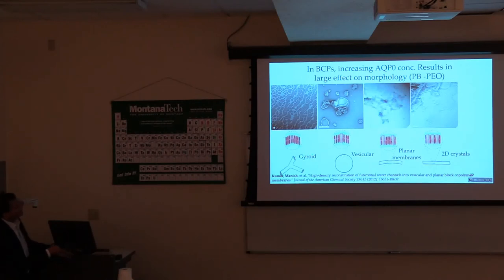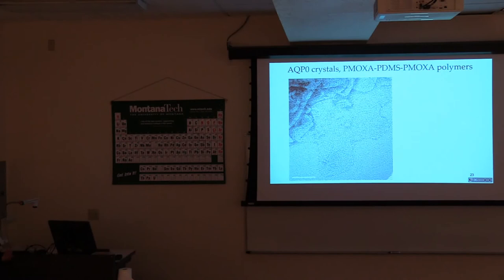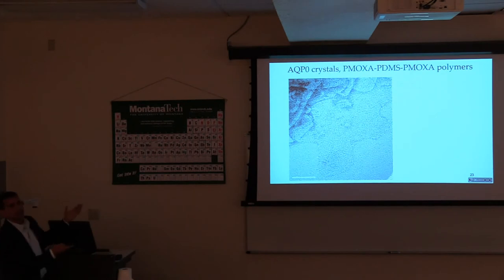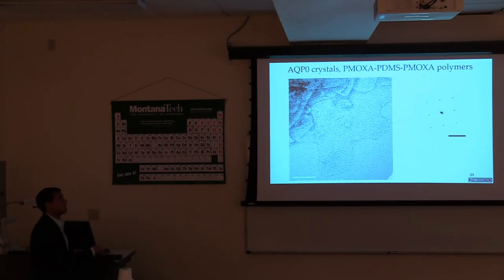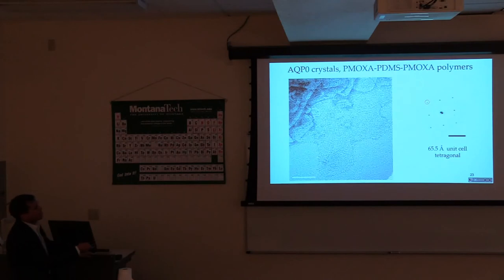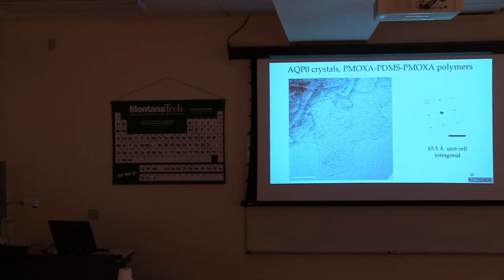Without any protein, the polymer makes a gyroid phase — worm-like structures. But when you start adding protein, you start making vesicles and then some larger sheets. Looking closer at these sheets, there is a pattern. The best test for a pattern is a Fourier transform of the image — like doing an electron diffraction image. If you do that, you see a very sharp square array, which means it's organized. Comparing with the known aquaporin array, it's exactly the same unit cell: a 65.5 angstrom tetragonal unit cell. So in block copolymers, we can make the same structure as in lipids. But again, this is only 100 nanometers — too small to make a useful membrane.